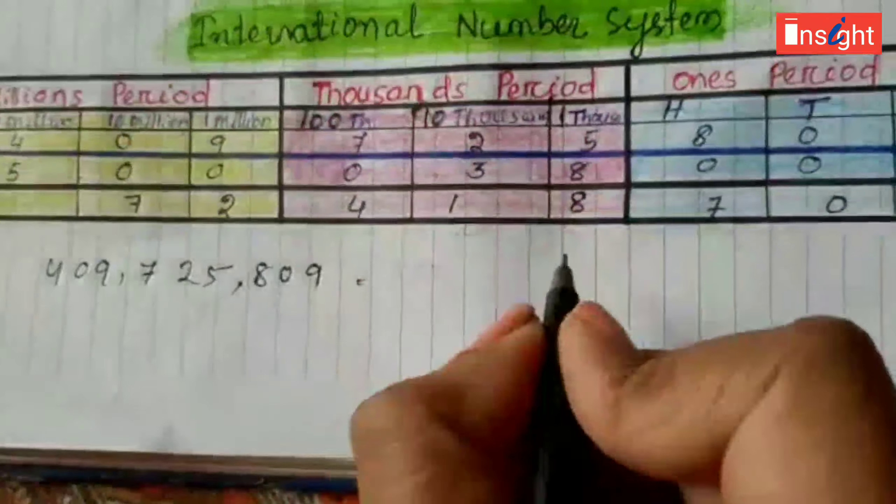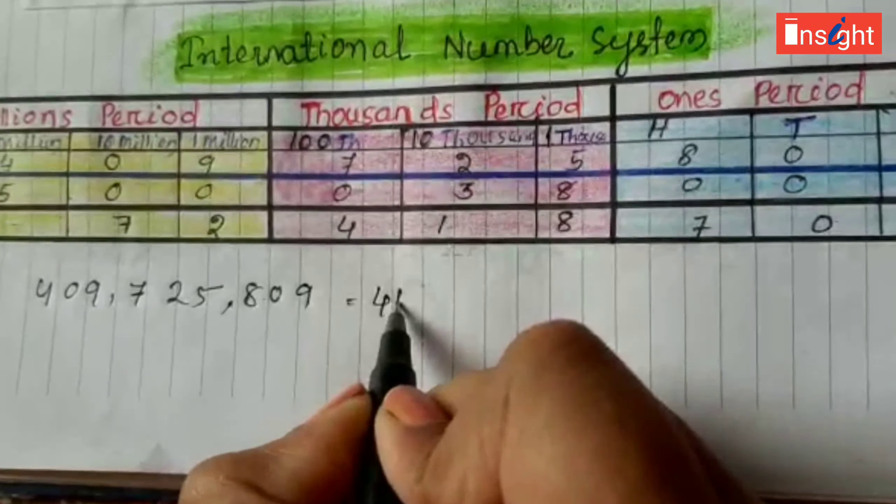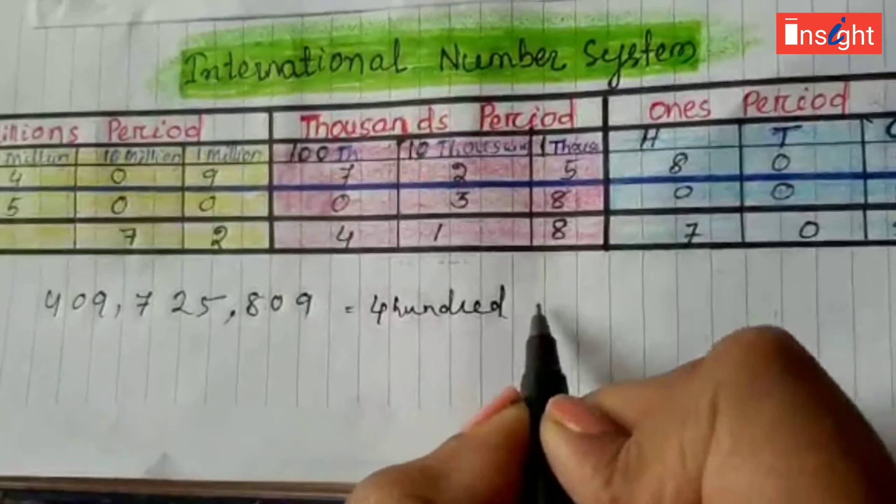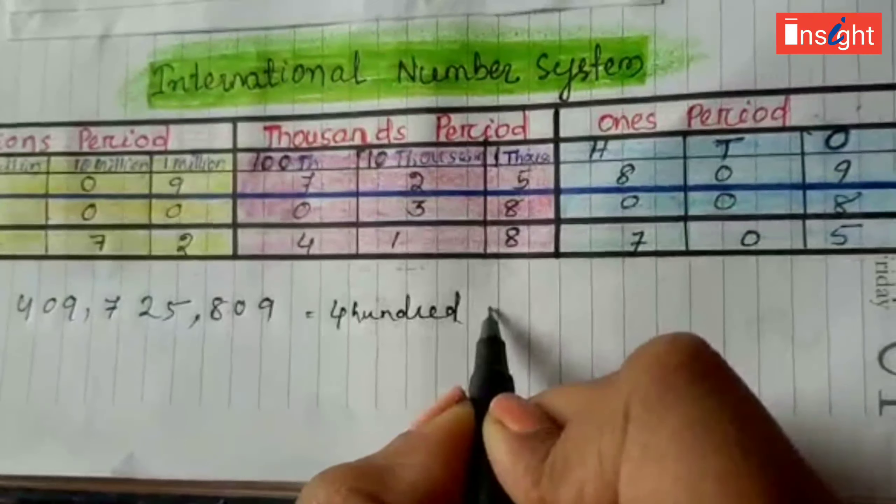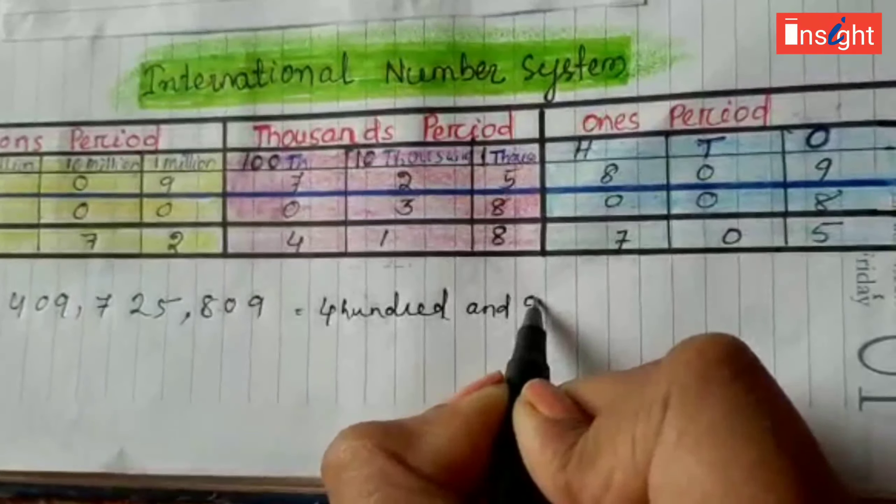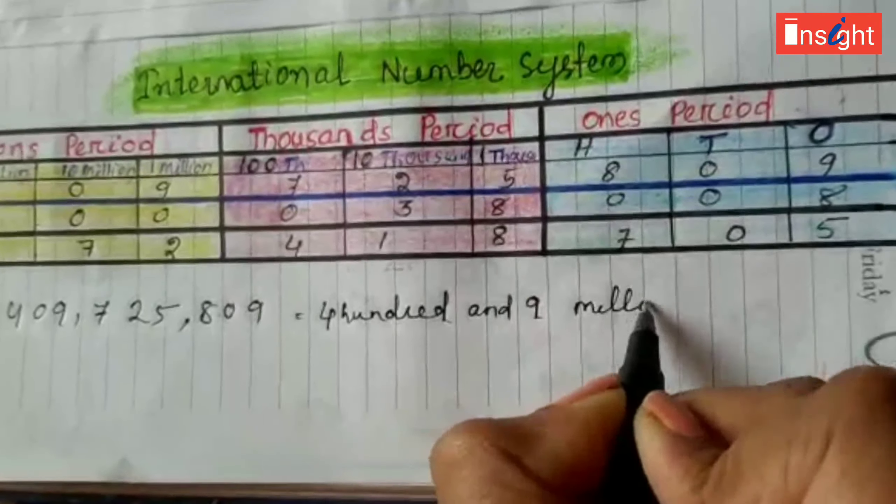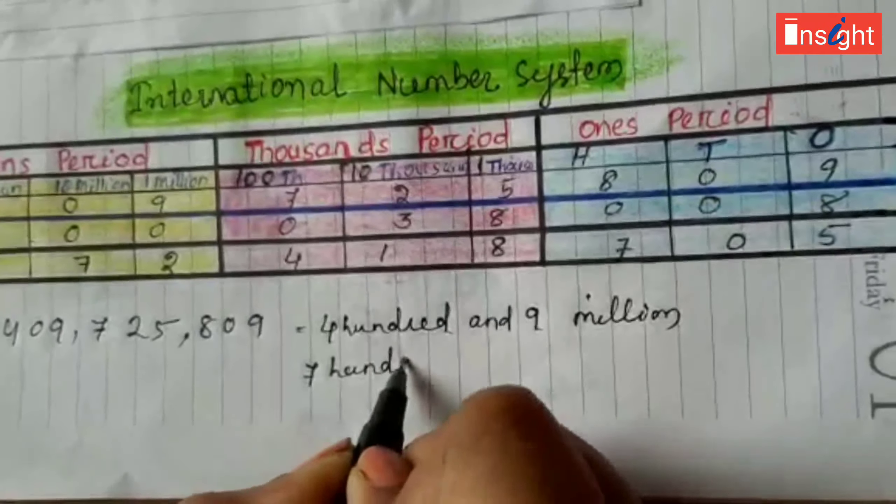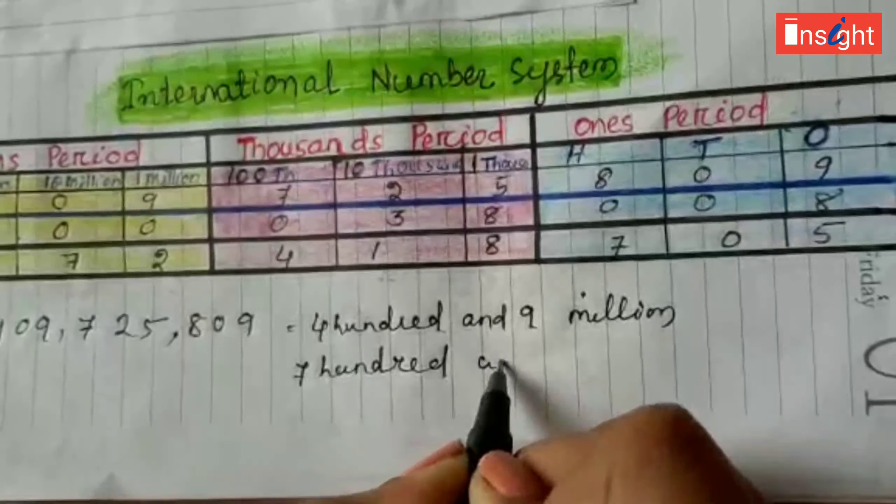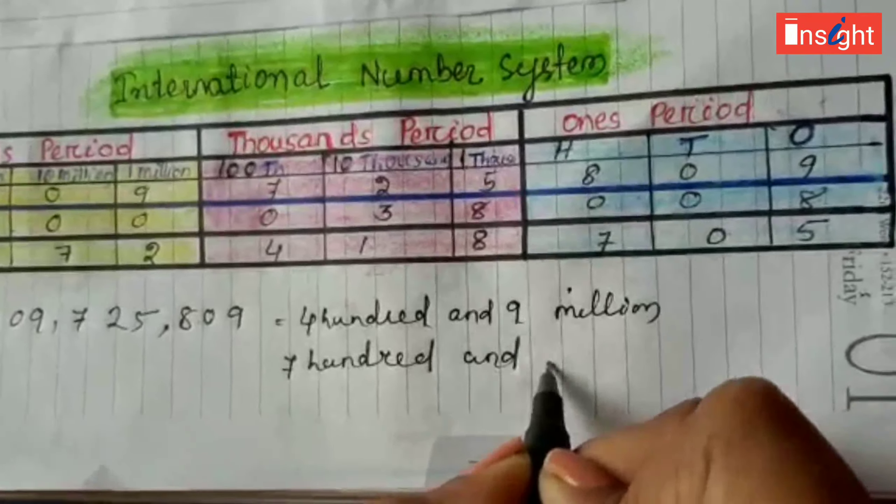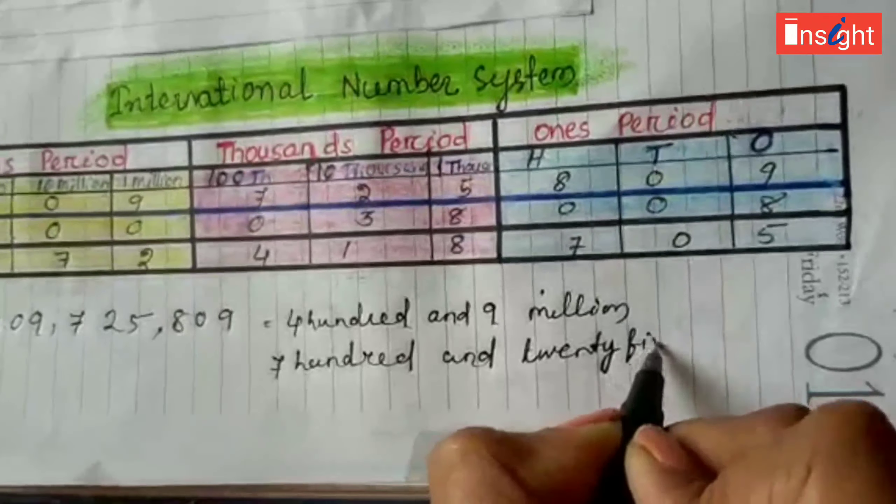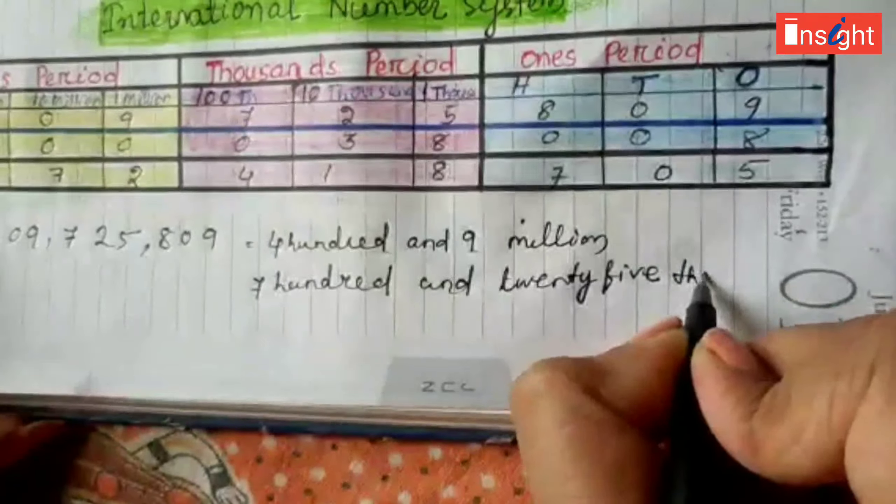Now write: one hundred twenty-three million, four hundred nine thousand, seven hundred twenty-five.